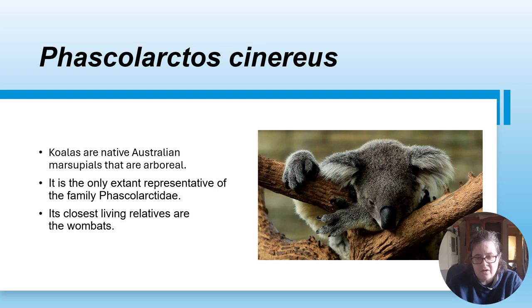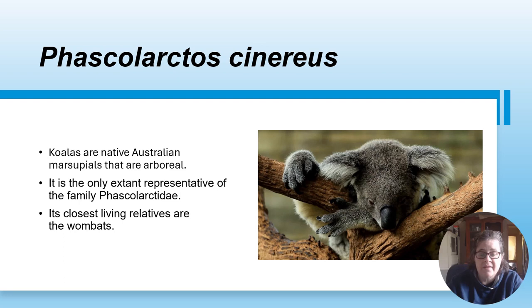Koalas are called Phascolarctos cinereus. They are native Australian marsupials that are arboreal - as in they live in the trees. They live primarily in eucalyptus trees and are the only extant, meaning existing, representative of the family Phascolarctidae. The closest living relatives to koalas are wombats.